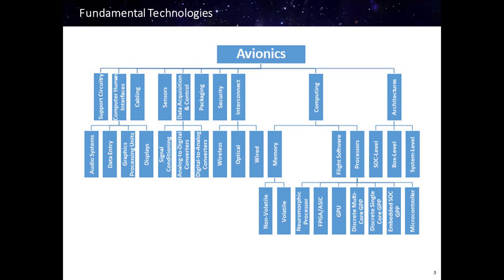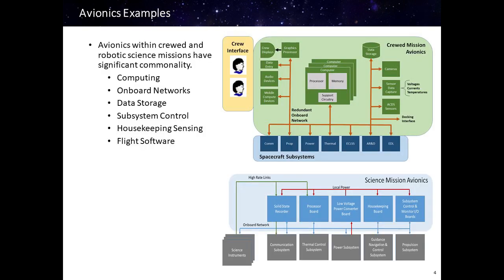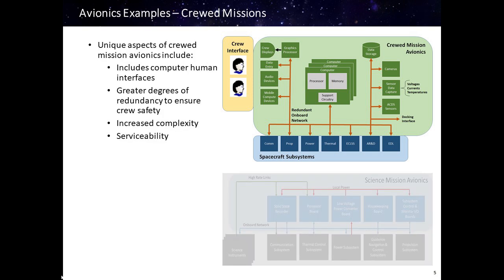Other areas included are packaging, security, sensor data acquisition and control, as well as cabling and support circuitry. We've provided a couple of illustrations — one for crewed mission avionics and another for robotic science mission avionics. You'll see there are some commonalities between these two, including the presence of onboard computing, networks, data storage, subsystem control, housekeeping sensing, and flight software. Some unique aspects of crewed missions include: